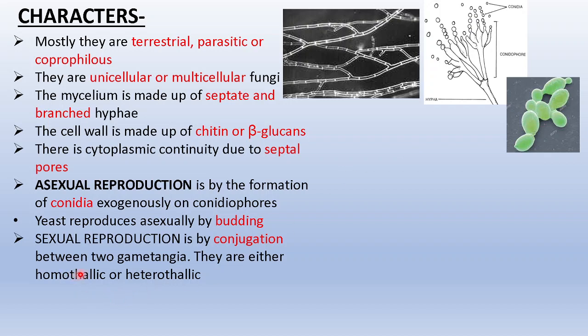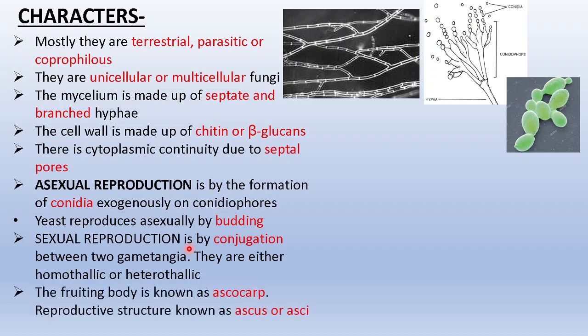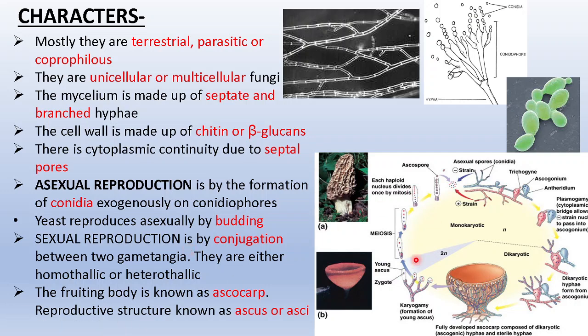Homothallic means both thalli are exactly the same; heterothallic means there are some differences with regard to strain in both thalli that will unite during sexual reproduction. The fruiting body is known as the ascocarp, and the reproductive structure is known as the ascus or asci.